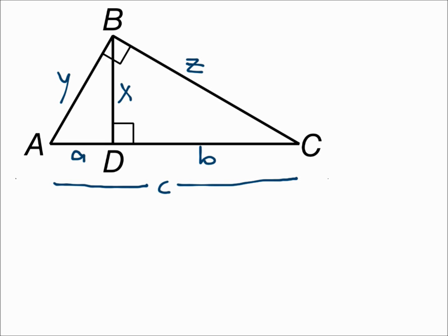Consider the small triangle on the left and the big triangle. To show that those are similar, we can show that since angle A is in the small triangle and it's in the big triangle, it's congruent to itself — that gives us one pair of congruent angles. Also, since the big triangle has a right angle and the triangle on the left has a right angle, that's another pair of congruent angles. So these triangles are similar because of AA similarity.